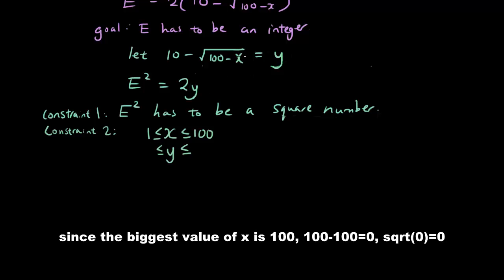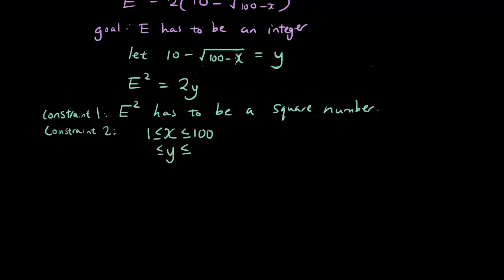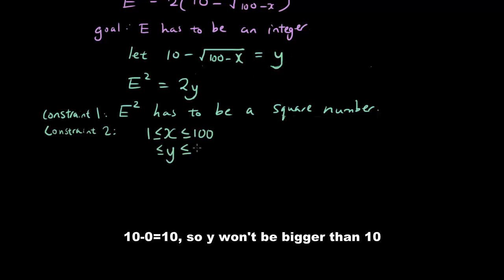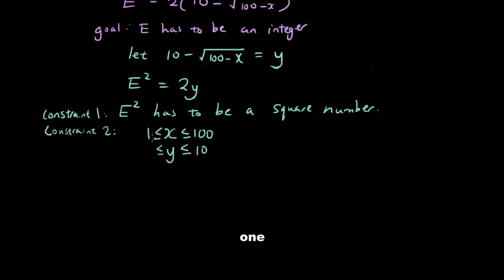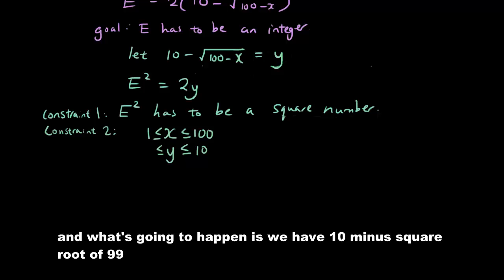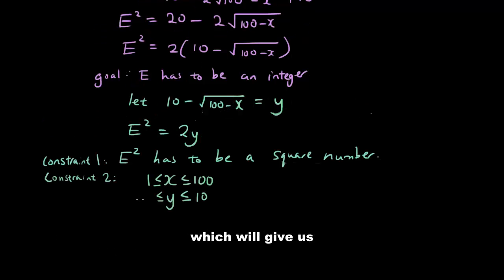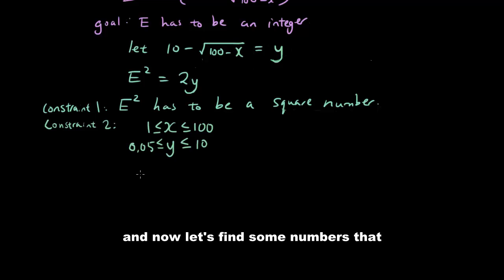Now let's look at our range. When x = 100, we get √(100 − 100) = √0 = 0, and 10 − 0 = 10, so y won't be bigger than 10. When x = 1, we have 10 − √99, which from the calculator gives y ≈ 0.05. So y ranges from just above 0 up to 10.